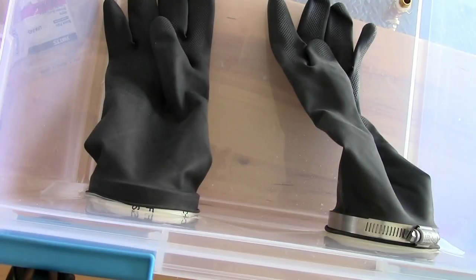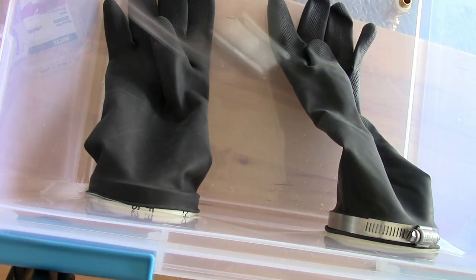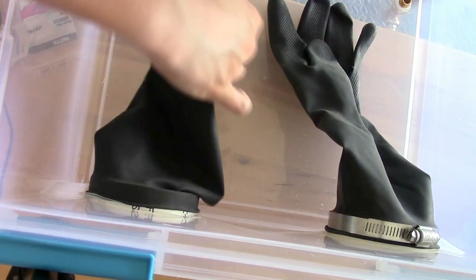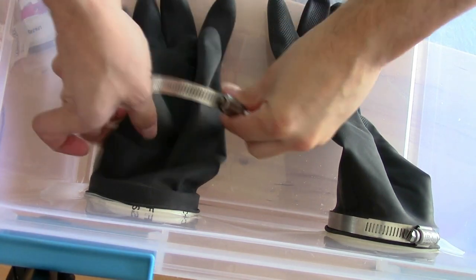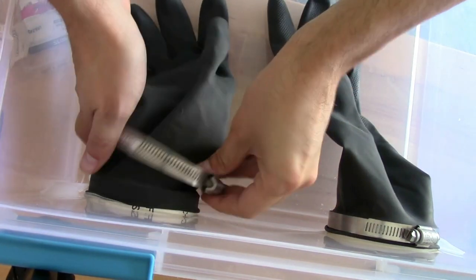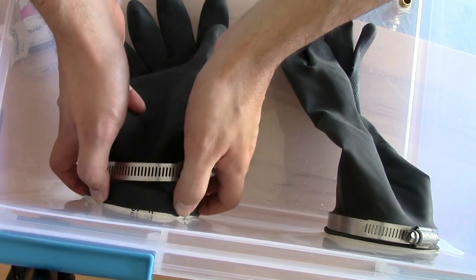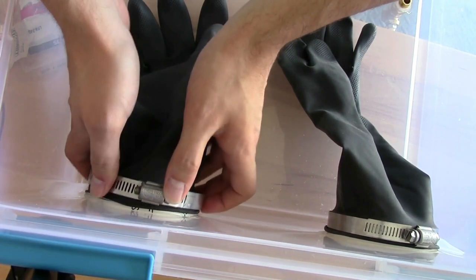And now to permanently secure the gloves in place we're going to use these pipe clamps. The three to five inch pipe clamps. And I've already done it on the one glove but it's very simple, it just goes over the other one on top of the PVC and you just use a screwdriver to secure it in place. Make sure the glove is as far back as you can so you have the most surface area.